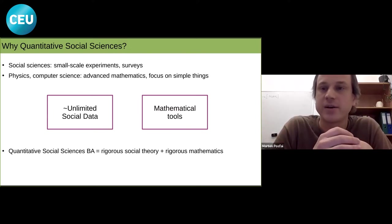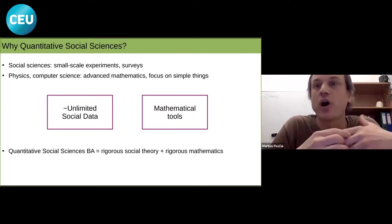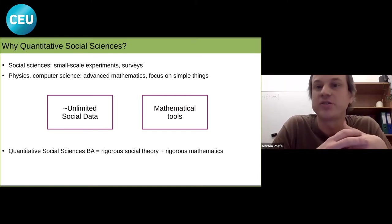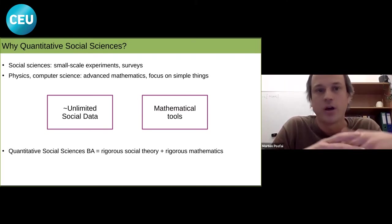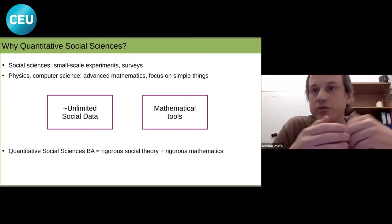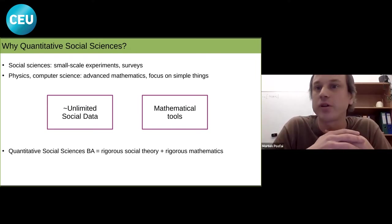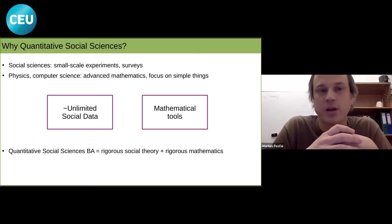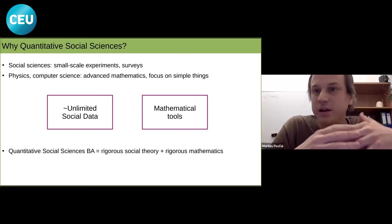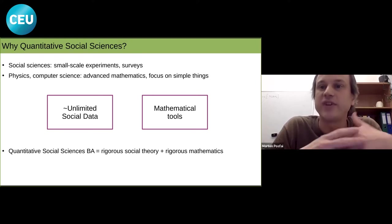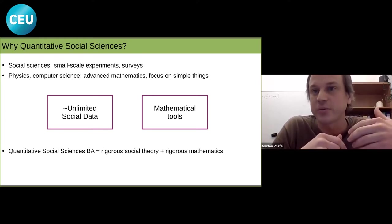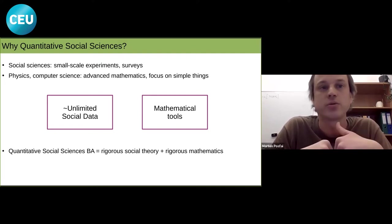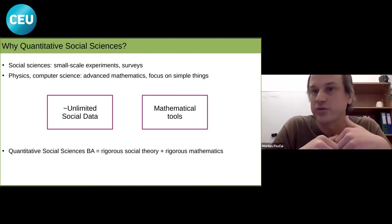What happened in the last couple of decades is that we started to produce almost unlimited social data. With the digital revolution, we are constantly connected to the internet, everything we do is being recorded, and we produce massive amounts of data. To analyze and understand this data, you need advanced mathematical tools that are closer to those of physics and computer science than to classical social sciences.